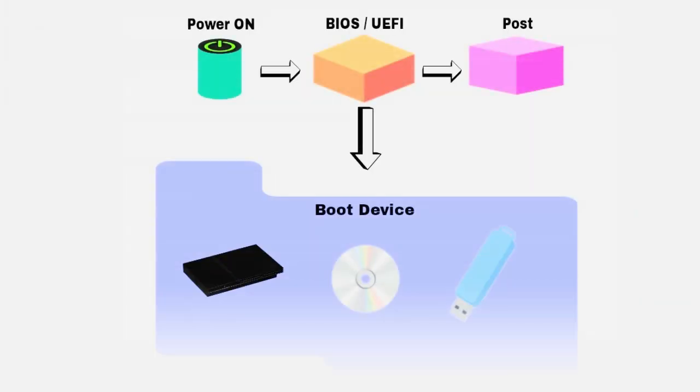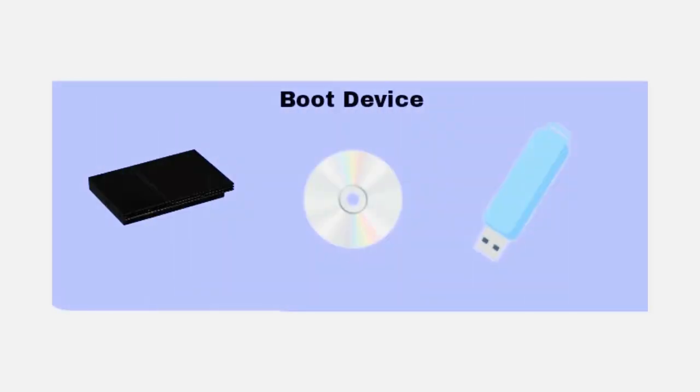The next step involves BIOS. What is the BIOS? BIOS helps us proceed to the next step. You will be connected to the secondary devices. In the secondary devices, we search for the booting sequence. In the booting sequence, you prioritize devices — for example, hard disk or CD drive. The first booting sequence is hard disk drive, second is CD drive, and third is network.